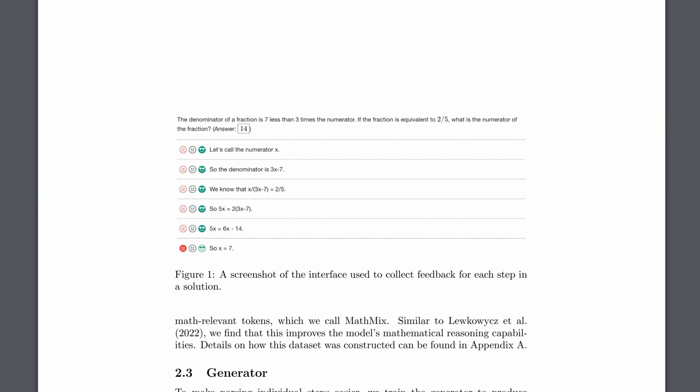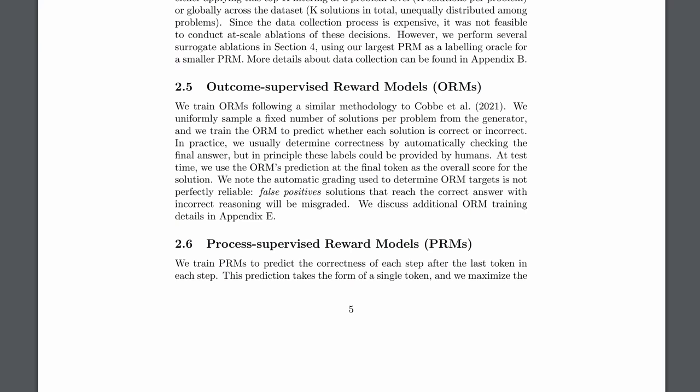So how could they give feedback based on working out or reasoning? Well, human labelers would come along and give each step in a generated solution either negative feedback, neutral feedback or positive feedback. Then, using that human label data, a model would be trained to predict the correctness of each step. In other words, it got good at recognizing good working out. As mentioned, there was another model trained just to focus on correct or incorrect final answers.